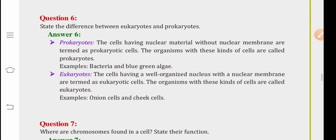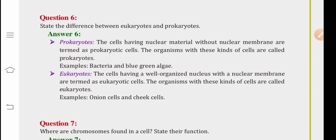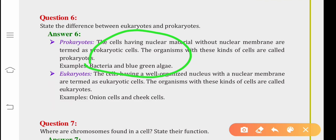Question number six is, state the differences between eukaryotes and prokaryotes. The prokaryotes are the cells having poorly developed nucleus. For example, bacteria and blue-green algae. Eukaryotes have a well-organized nucleus with a nuclear membrane and are termed as eukaryotic cells. Examples are onion cells, sheep cells or any other animal or plant cells.